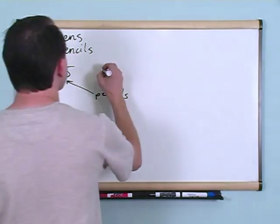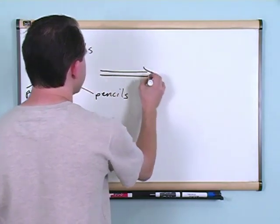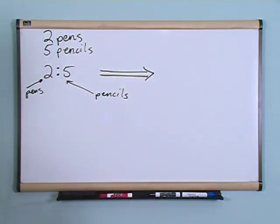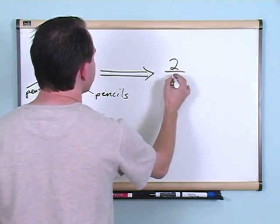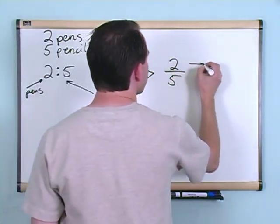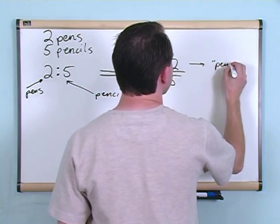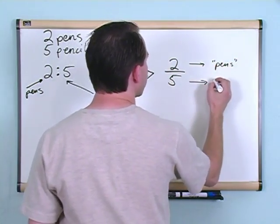Now you can also write it as a fraction and that's really the much more common way to do it. You can write it as a fraction. Because you have two numbers here, you could have a two on the top and a five on the bottom. And this number is the pens and this number corresponds to the pencils.